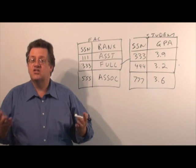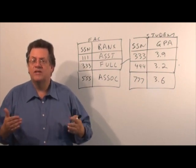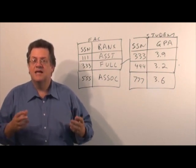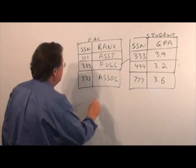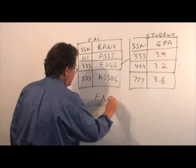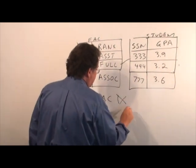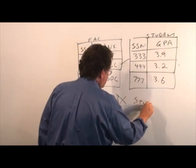So, in a semi-join, it's like a join, except we project out only those attributes from the table that we're interested in. So, we might write this as follows: Faculty semi-join with student.